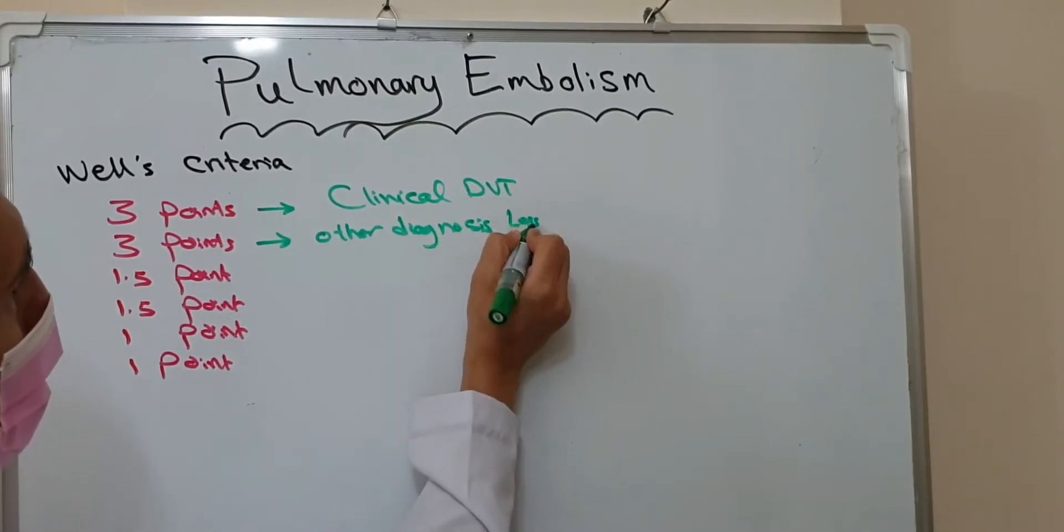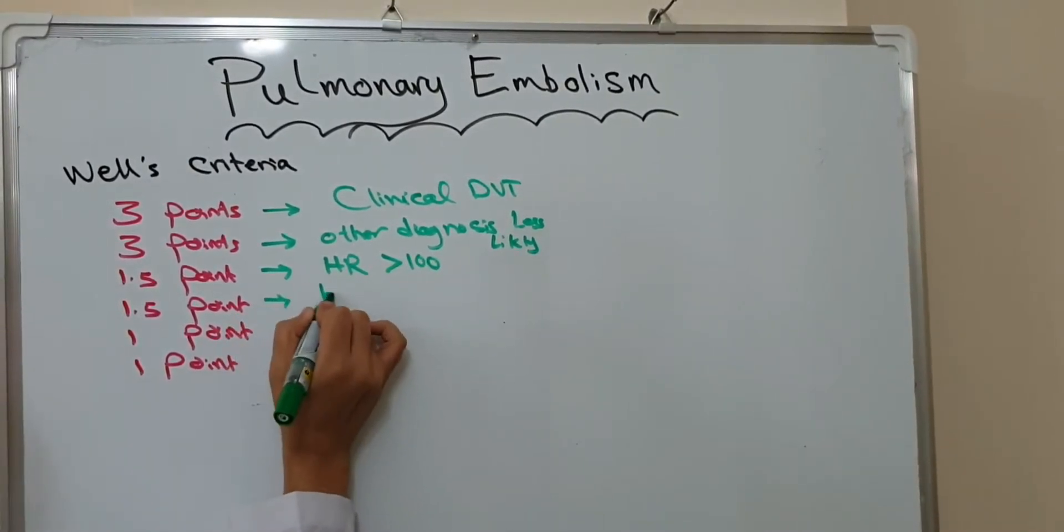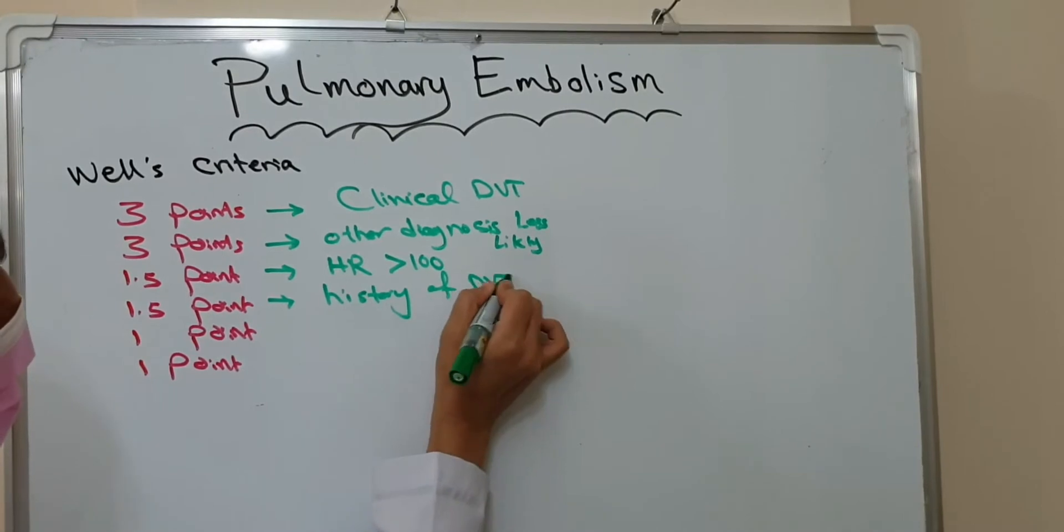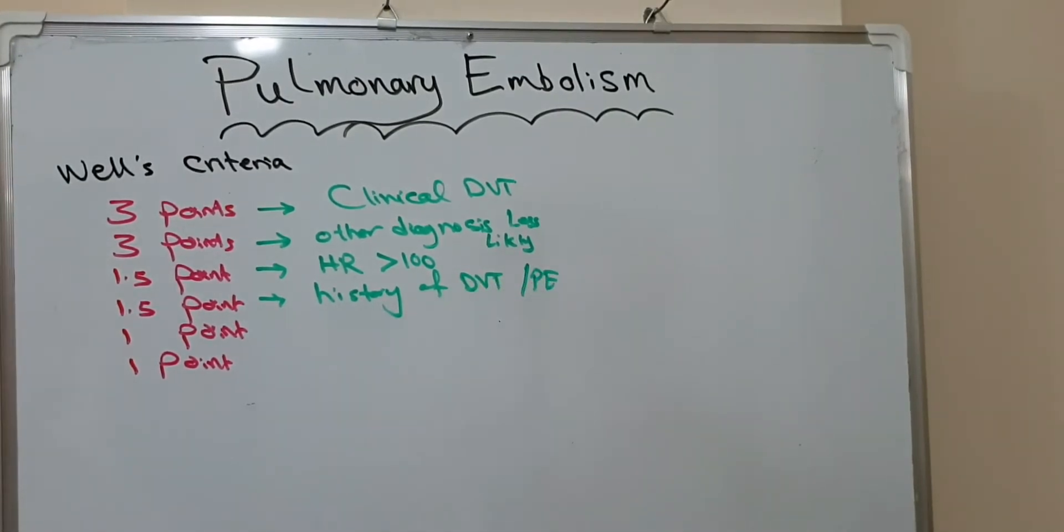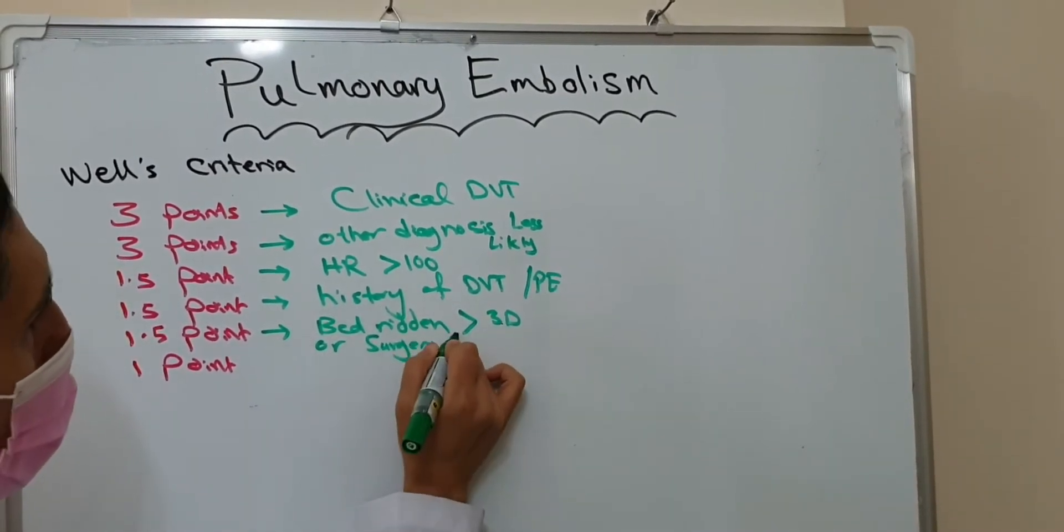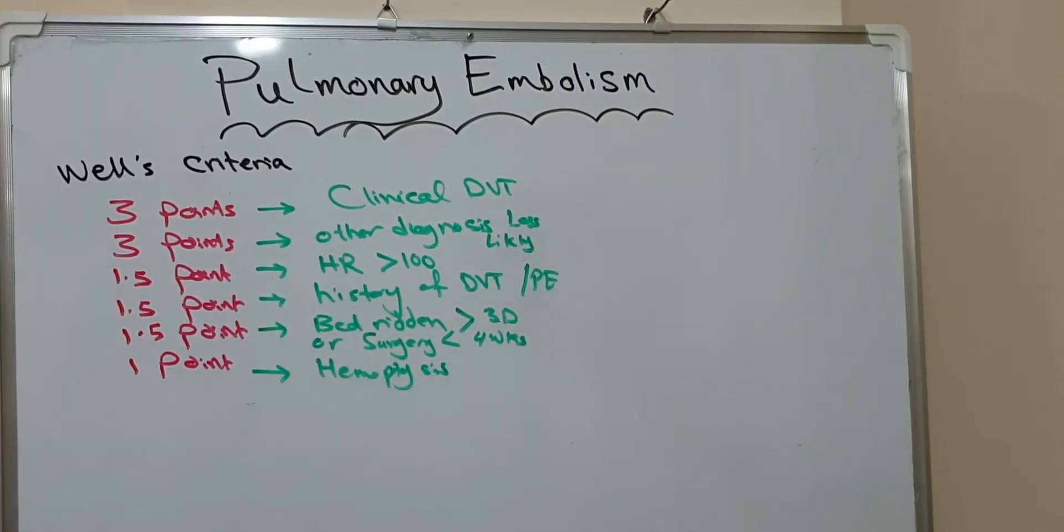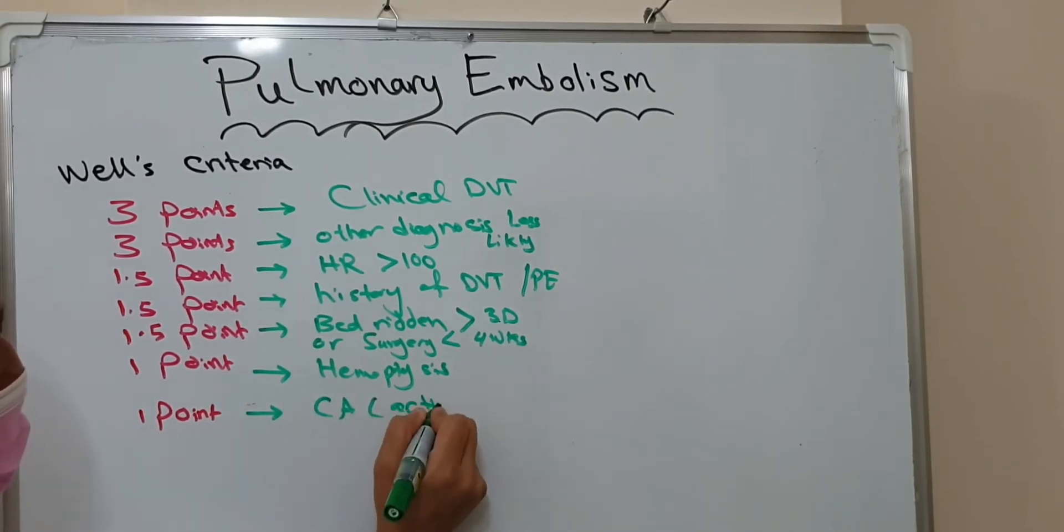We give three points if the patient has clinical signs of thrombosis, and three points if other diagnoses are less likely. 1.5 points if heart rate is more than 100, 0.5 points for history of DVT and pulmonary embolism, 0.5 points if the patient is bedridden for more than three days or had surgery in the last four weeks. One point for hemoptysis, and one point if the patient has active cancer or is on treatment for cancer in the last six months.